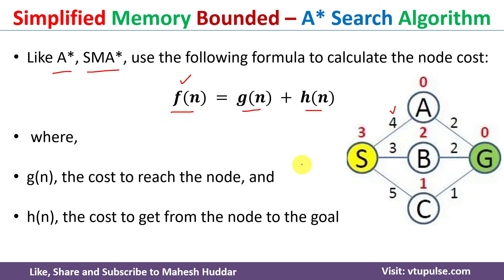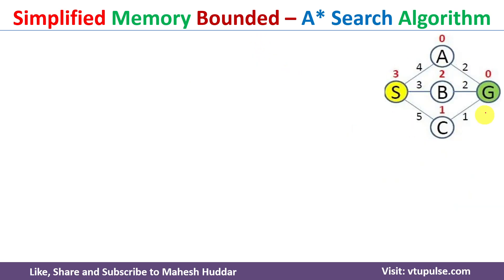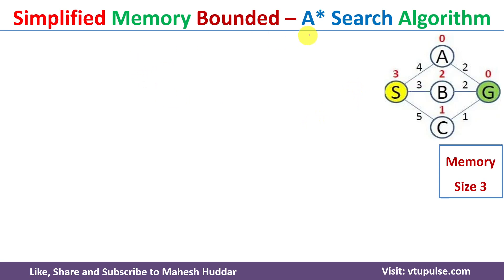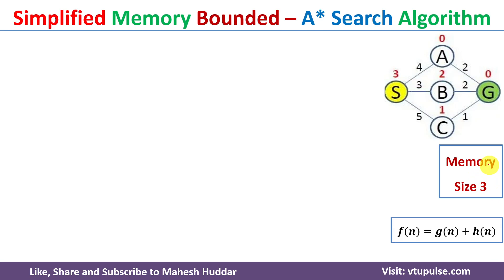We will take a simple example to understand the working principle of SMA*. We have a graph with five nodes where S is the source node and G is the goal node. Numbers in black are the actual costs and numbers in red are the heuristic values. In SMA* we define a memory size — in this case the memory size is 3, meaning at any given time we can store three nodes in memory.